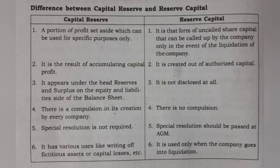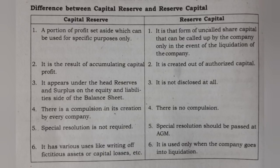The difference is that the capital is accumulating capital profit. It is a part of authorized capital. There is a compulsion in its creation by every company, whereas for the other there is no compulsion.